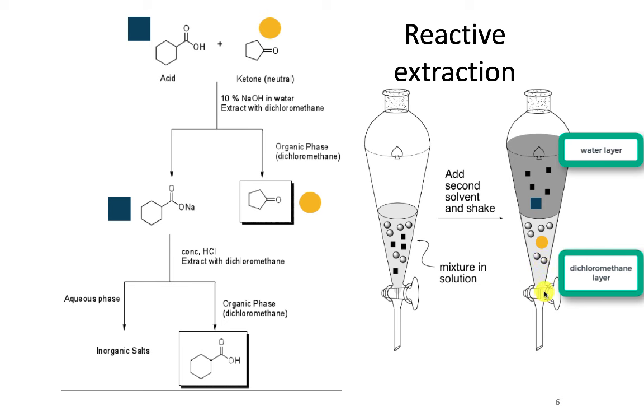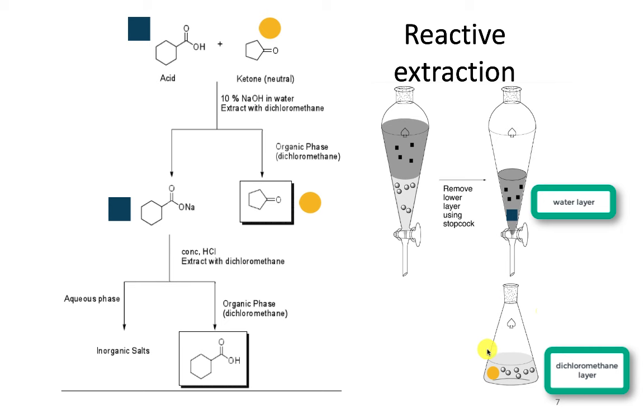So now what we're going to do is open up this stopcock, which is going to allow the bottom layer to drain out, and you're going to have an Erlenmeyer flask under here. And now what you're going to have is a solution. Oh, and that's what's happened over here. So now you have a pure solution of the ketone. You could evaporate the dichloromethane to get just a pure ketone.